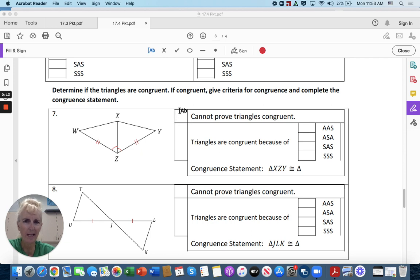So we're going to put an X here or here. If congruent, give criteria for the congruence and complete the congruence statement down here. So this one, we have this side is congruent to this side, these angles are congruent by their markings, and this side is congruent because it's the same side. ZX equals XZ.